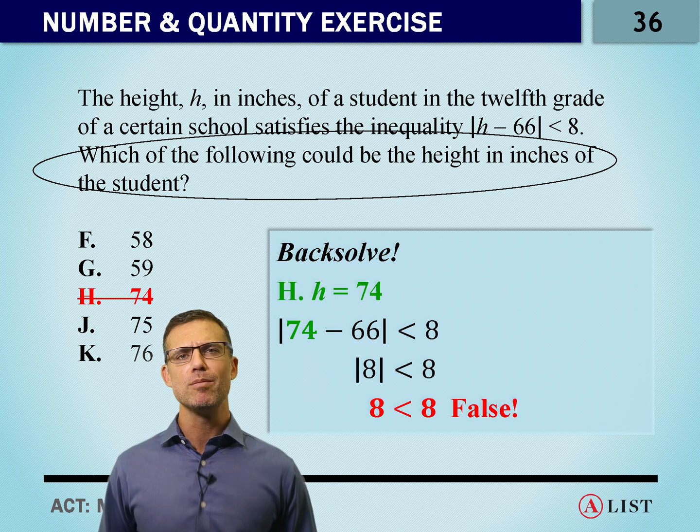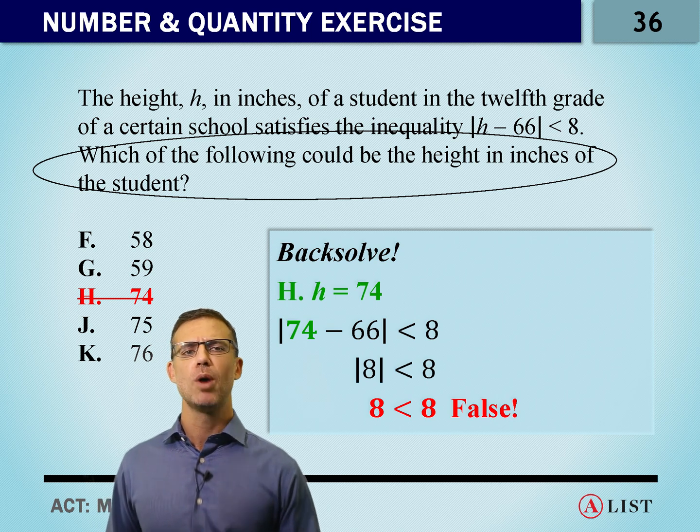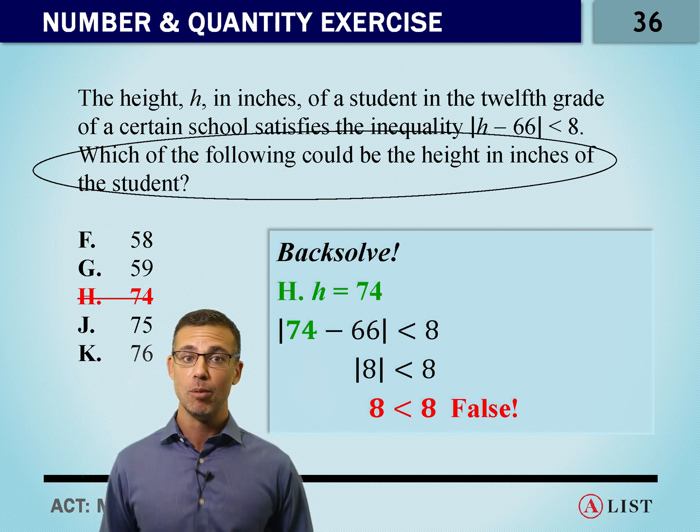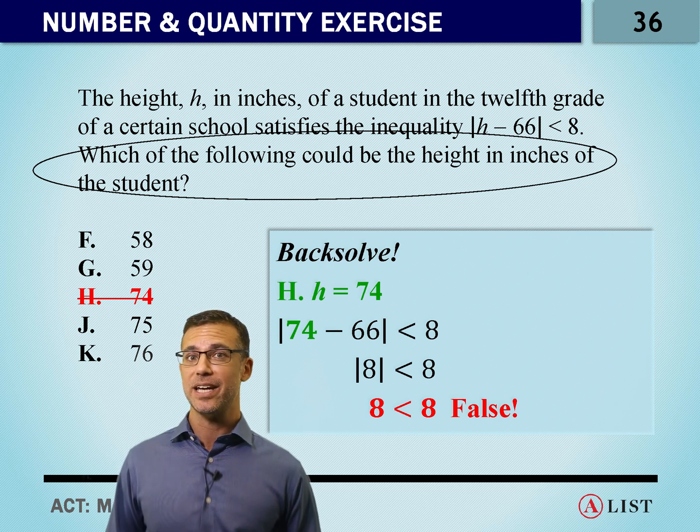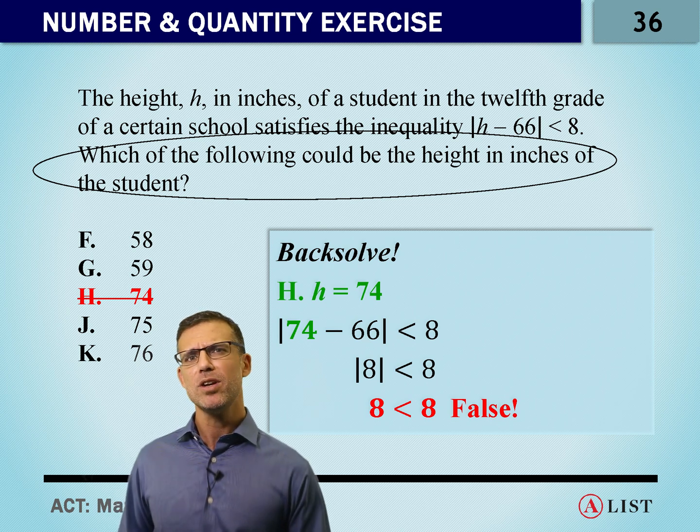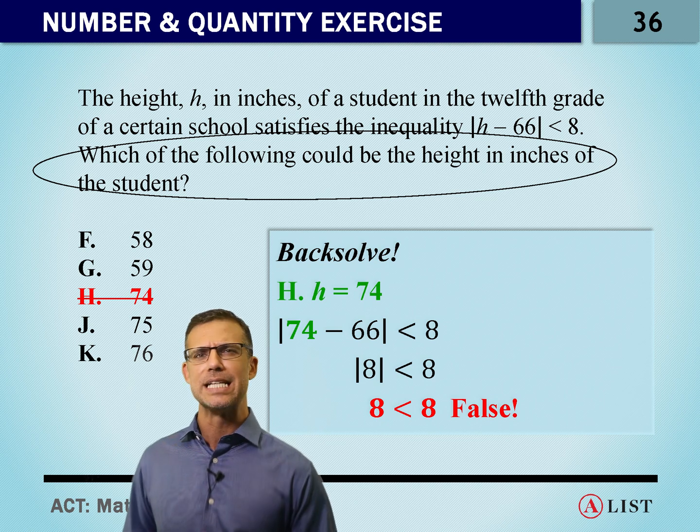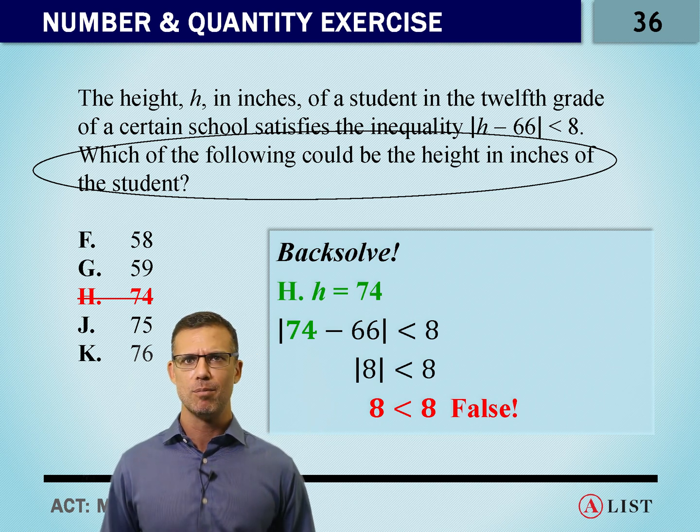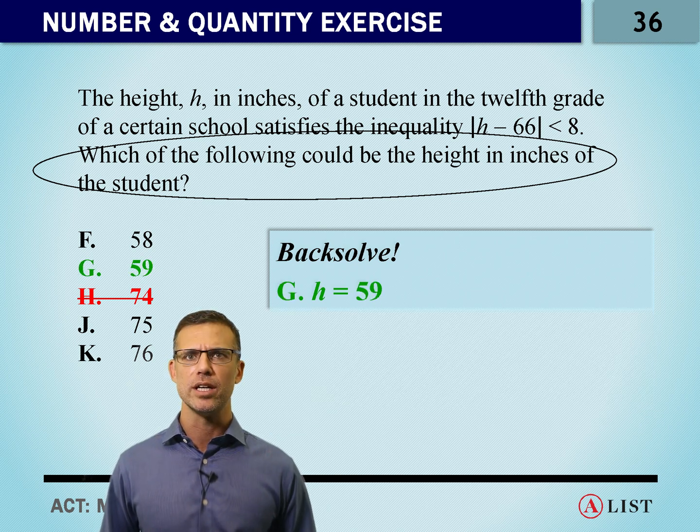Now, at this point you might be wondering, do I go smaller or do I go bigger? Well, the less than might indicate perhaps we need a lower number. But remember, even if you go in the wrong direction, it doesn't matter. You can test that number and then change course if it still doesn't work. But let's go to G, 59.